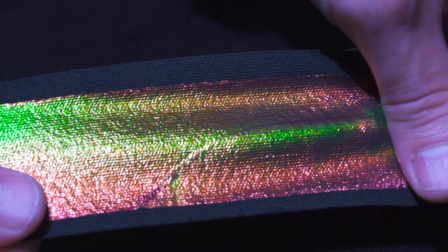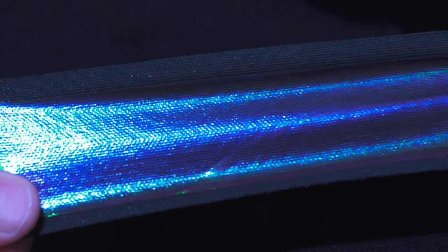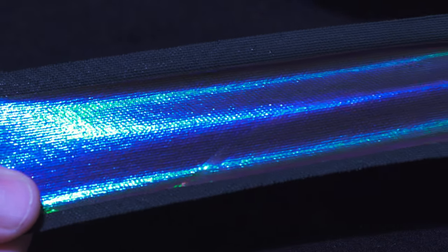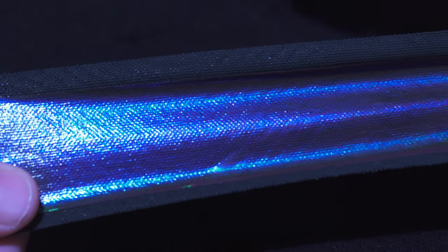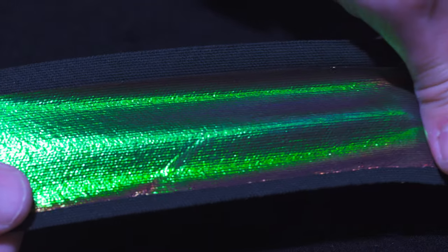The first application we've been looking at is actually to develop compression bandages. If we stick a thin sheet of this material onto a compression bandage, then the color of that bandage is a visual indicator of how much force you're applying as you wrap it around a leg.